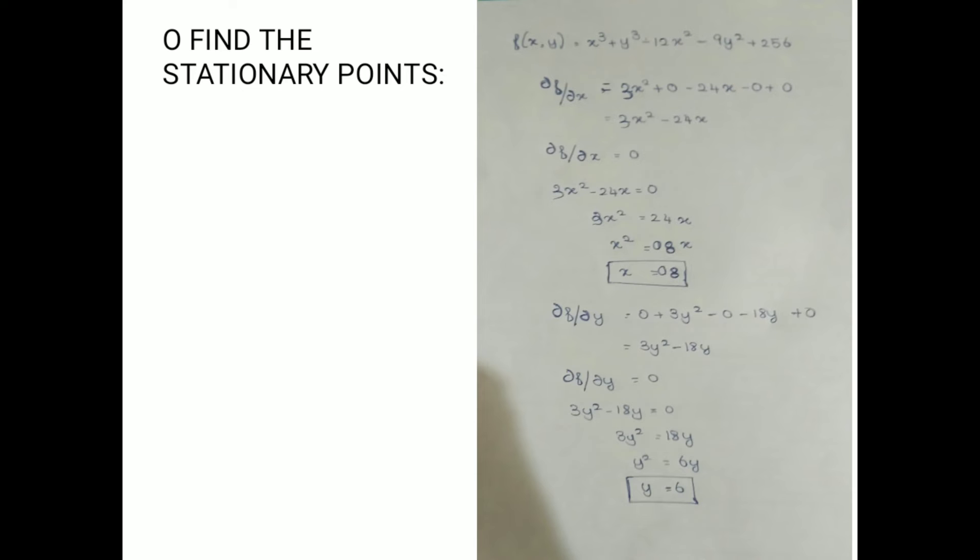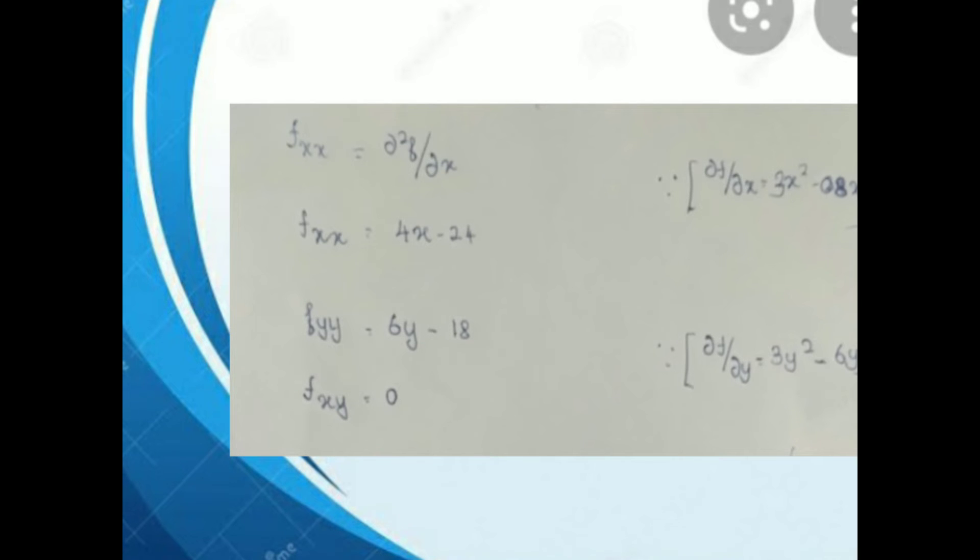The stationary point is (8, 6). Now find the second-order partial derivatives. f_xx = ∂²f/∂x² = 6x - 24. f_yy = ∂²f/∂y² = 6y - 18. f_xy = ∂²f/∂x∂y = 0.